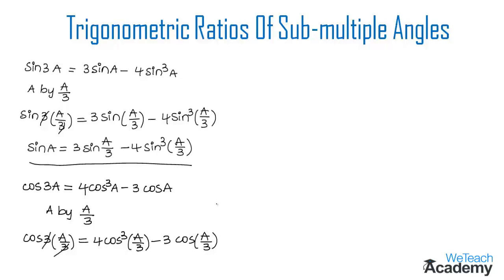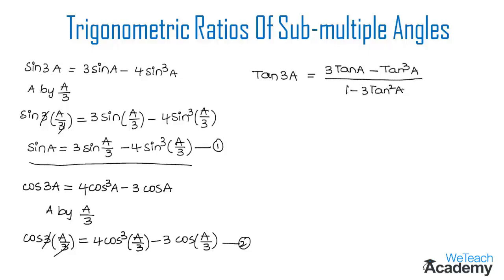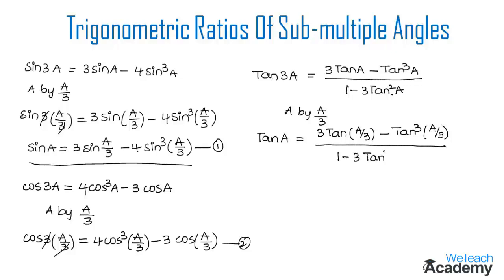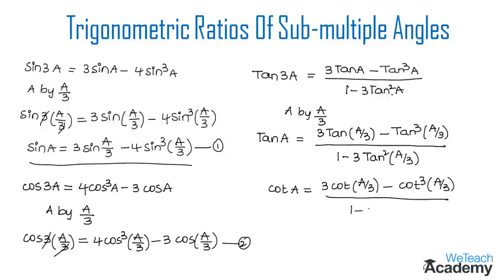We name the formula for sine a as equation 1 and for cos a as equation 2. Now let us find the formula for the submultiple angle for tan. The multiple angle formula is: tan 3a is equal to 3 tan a minus tan cube a divided by 1 minus 3 tan square a. Replacing a by a by 3, we get tan a is equal to 3 tan a by 3 minus tan cube a by 3 divided by 1 minus 3 tan square a by 3. Similarly, cot a is equal to 3 cot a by 3 minus cot cube a by 3 divided by 1 minus 3 cot square a by 3.